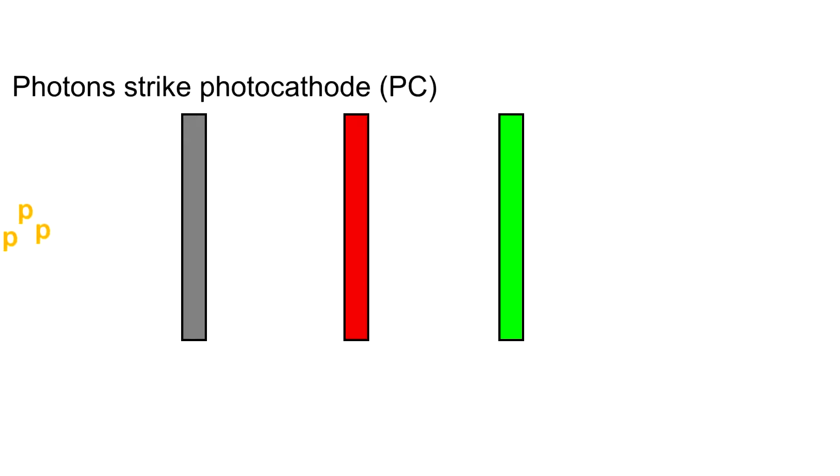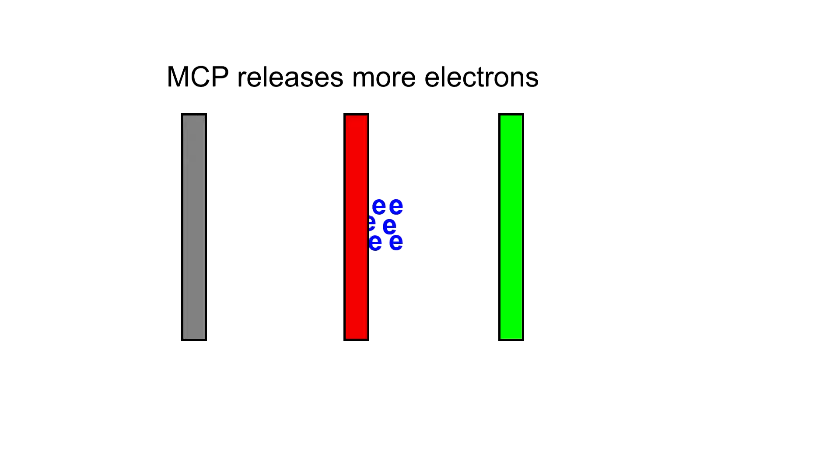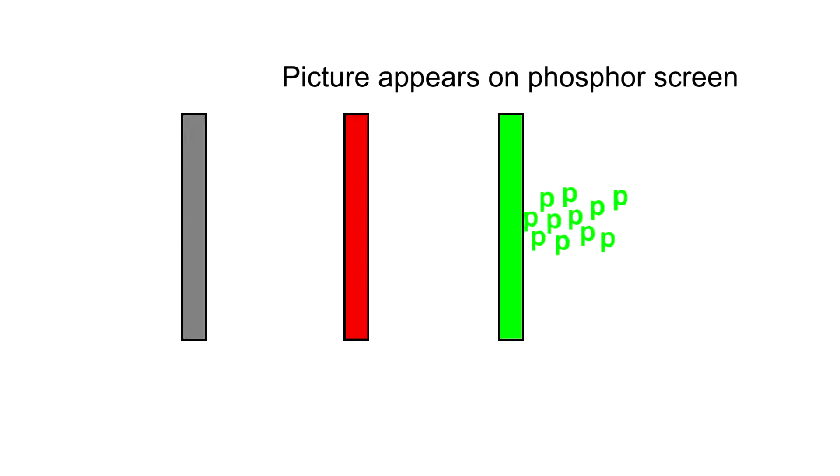When ambient light photons hit the negatively charged photocathode, the photocathode will release electrons into the tube. These electrons then hit the negatively charged microchannel plate, which releases even more electrons into the tube. These multiplied electrons then hit the phosphor screen, which releases photons in response, creating a visible image.